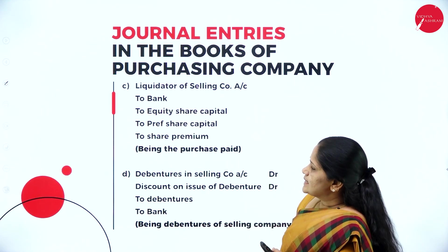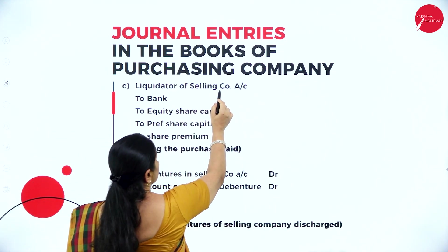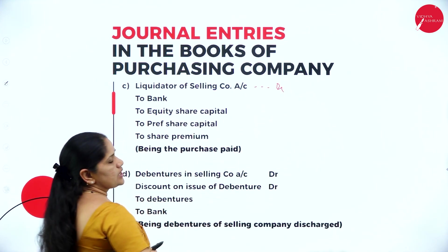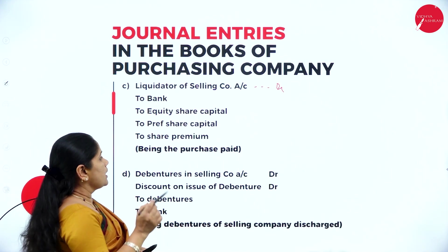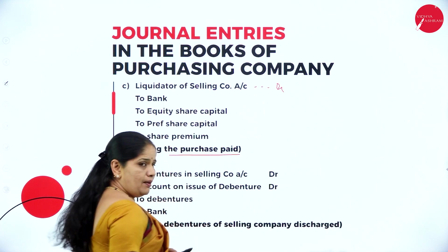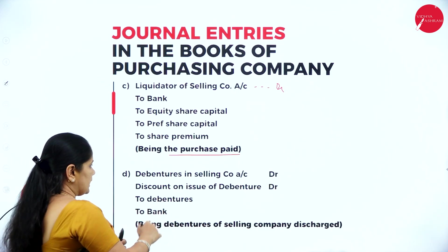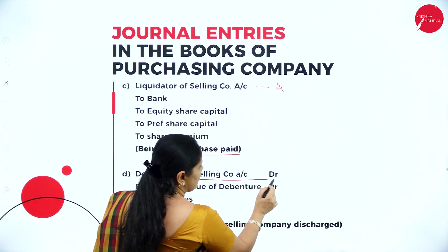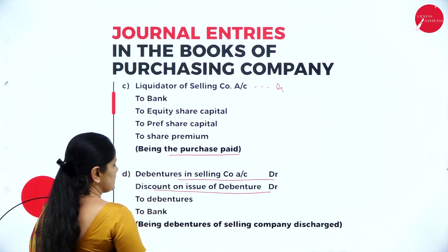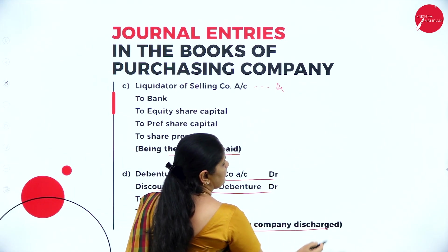The next entry will be for the payment of the business purchase consideration. Liquidator of selling company account debited to bank, to equity share capital account, to preference share capital account, to share premium account, being the purchase consideration paid. If the debentures are taken over by the purchasing company, the entry will be: debentures in selling company account debited, discount on issue of debentures debited, to debentures account, to bank account, being debentures of selling company discharged.